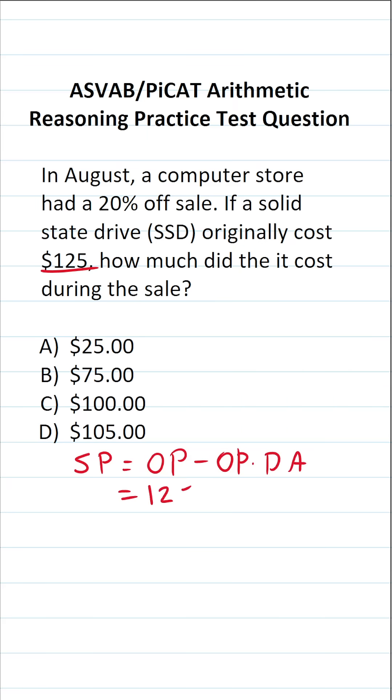We know that the SSD originally cost $125, so this becomes $125 minus $125 times the discount amount, which was 20%. I'm going to express that as a decimal as 0.2, so this becomes $125 times 0.2.